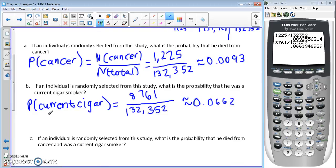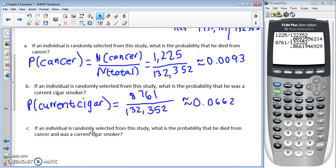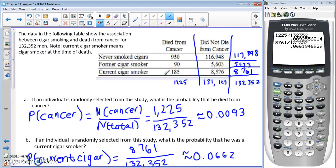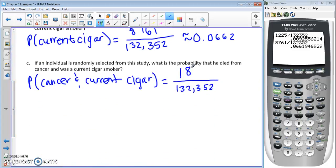Part C: if an individual is randomly selected from the study, what is the probability that he died from cancer and was a current cigar smoker? We're looking for where both of those things occur. We want that out of the total since this is randomly selected from the study. Where they died from cancer and were a current cigar smoker is this 185 here. Our decimal approximation is 0.0014, so very unlikely there.